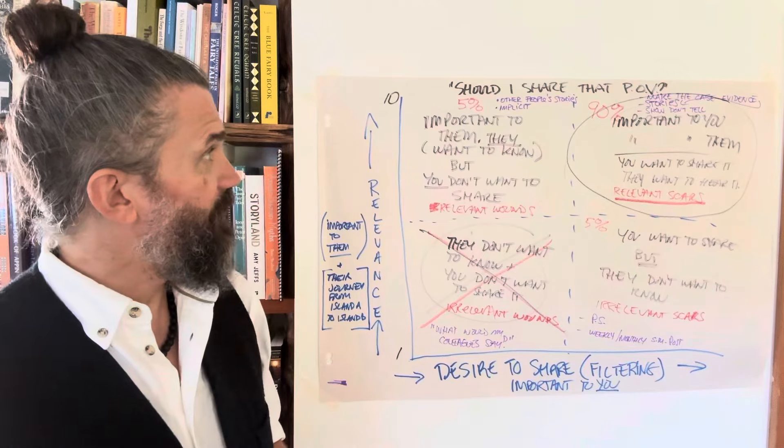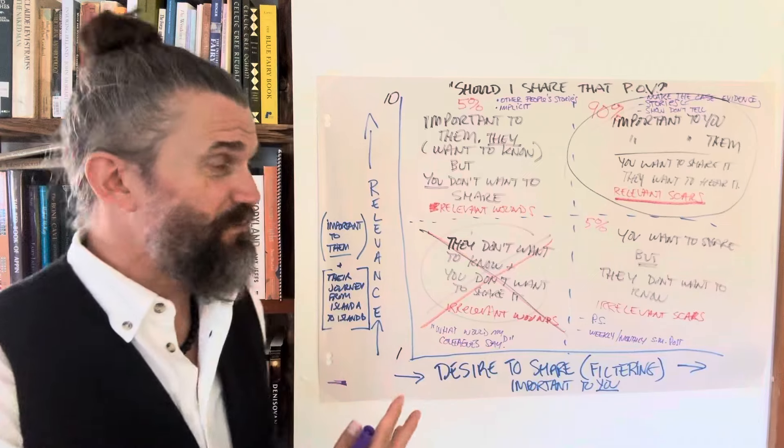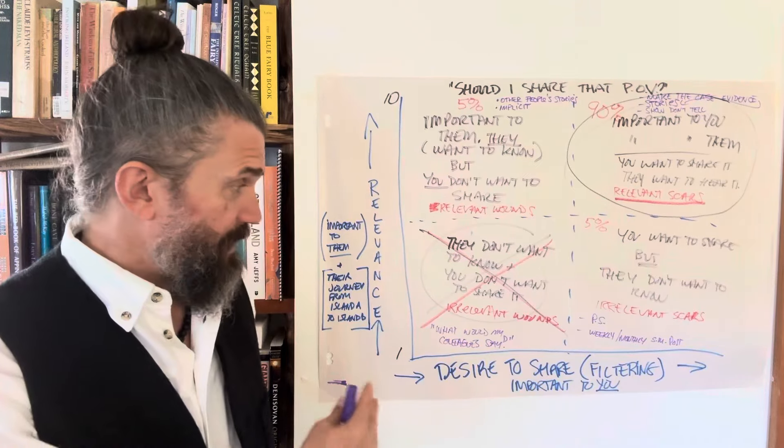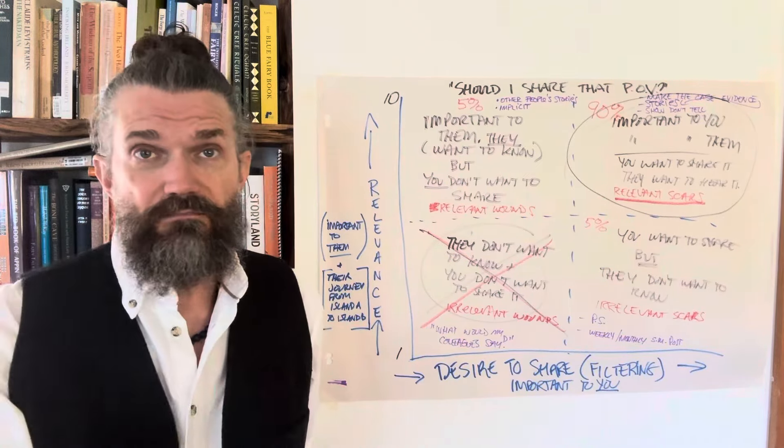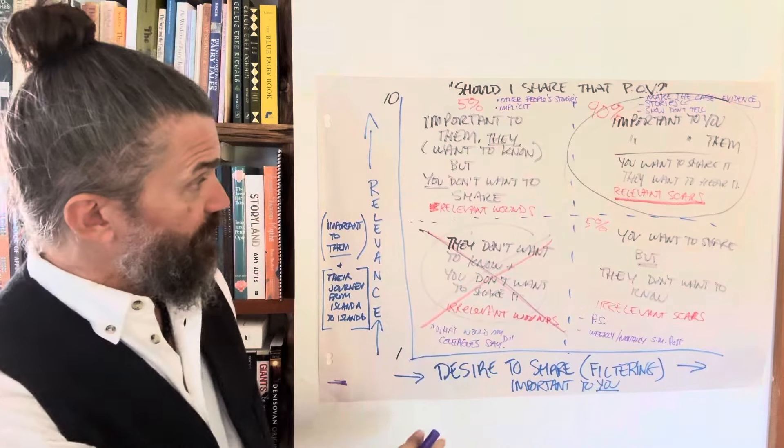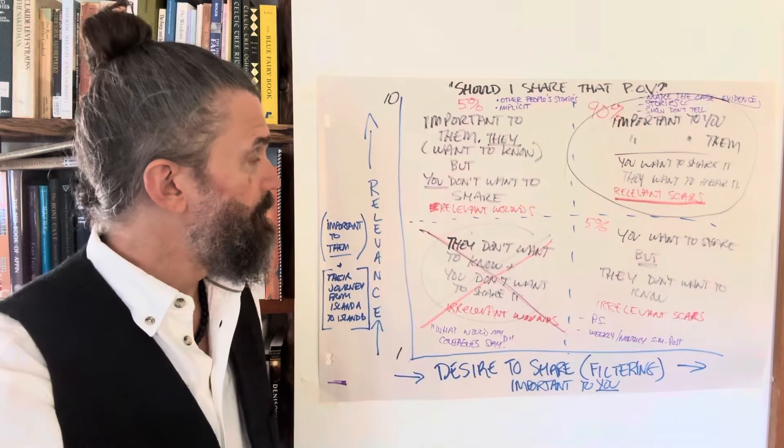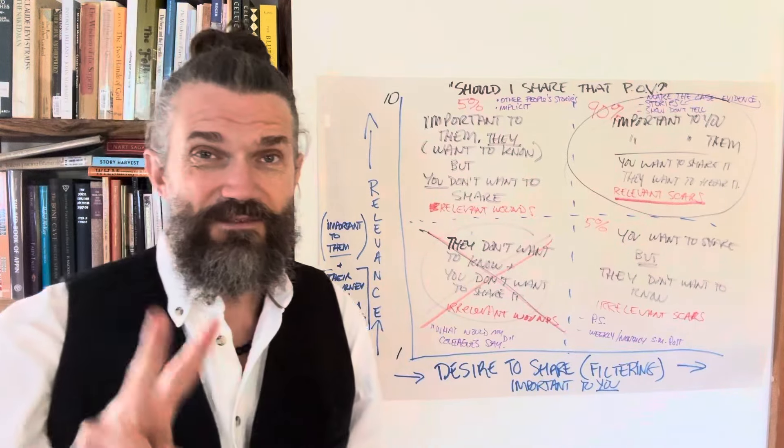I think those are my main thoughts for part three that I wanted to add to this. Again, I would love to hear your thoughts on this, what this brings up for you. It's a very new model, not attached to it. Maybe you have ideas of other axes or different things that could go on these squares. Maybe this reminds you of other things you've seen in other places. I'd love to hear your thoughts. Thanks so much.